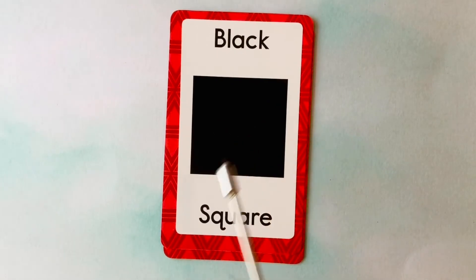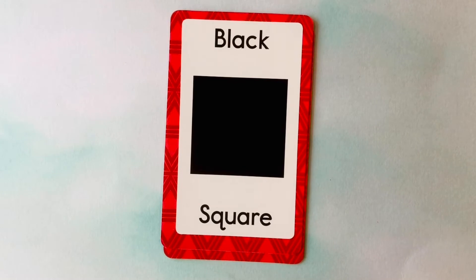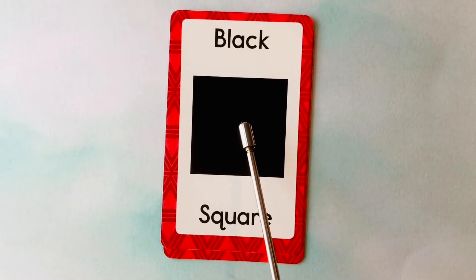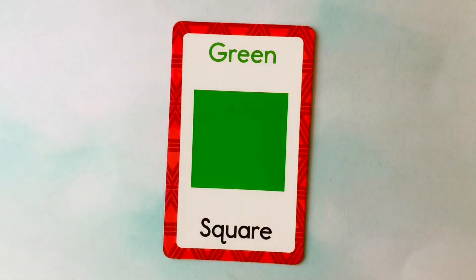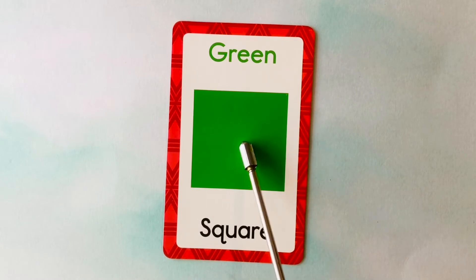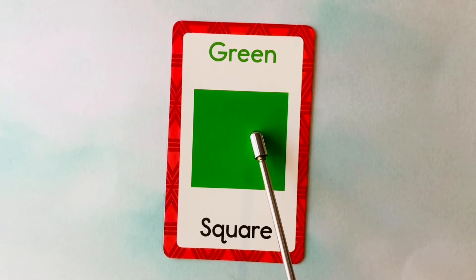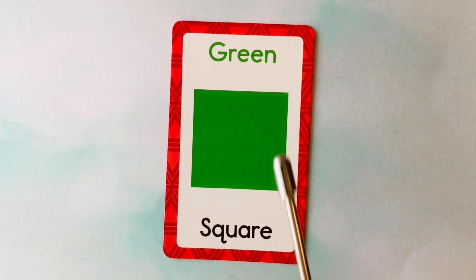This is a square. What color is this square? It's a black square. This is a black square. This is also a square. What color is this square? It's a green square. This is a green square. Nicely done.